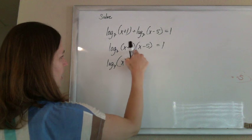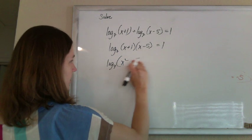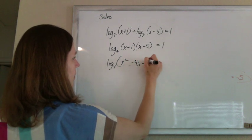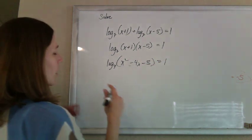x squared minus 5 plus 1 is minus 4x minus 5 equaling a 1. Alright,